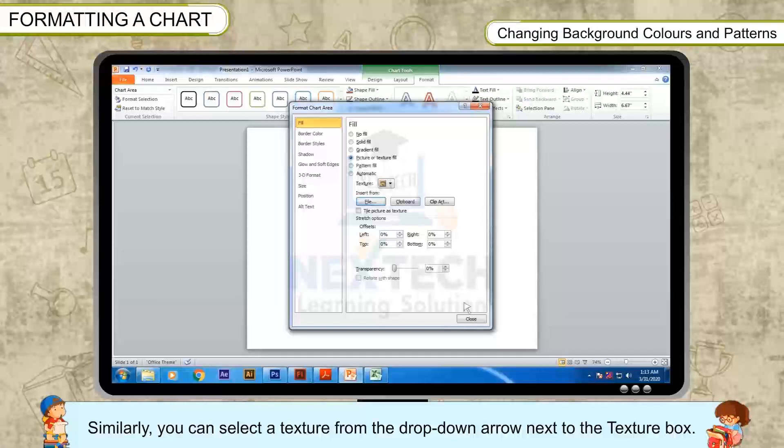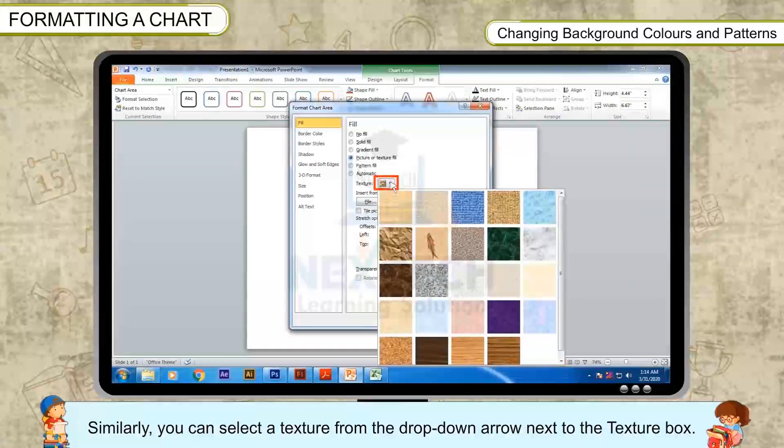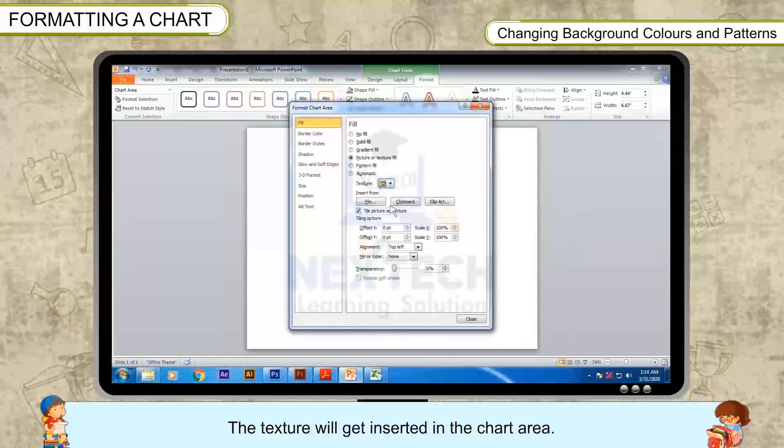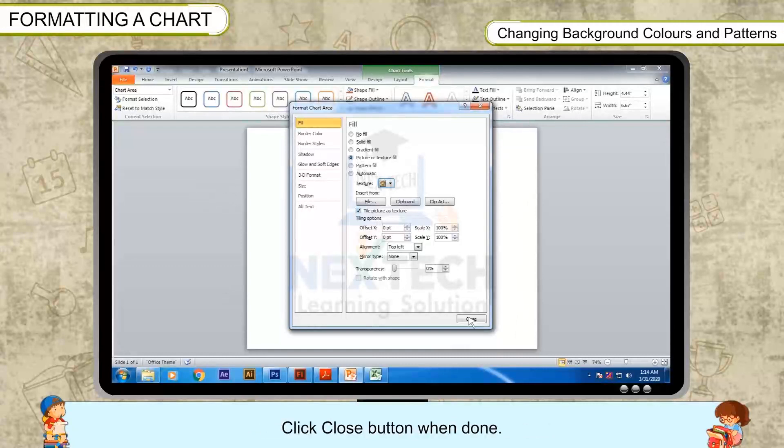Similarly, you can select a texture from the drop-down arrow next to the Texture box. The texture will get inserted in the chart area. Click Close button when done.